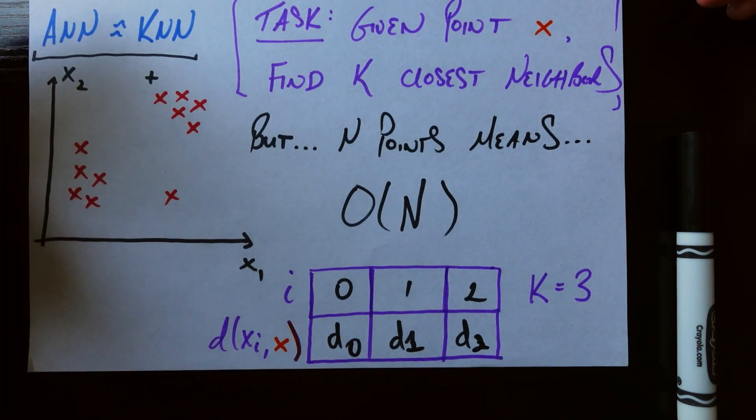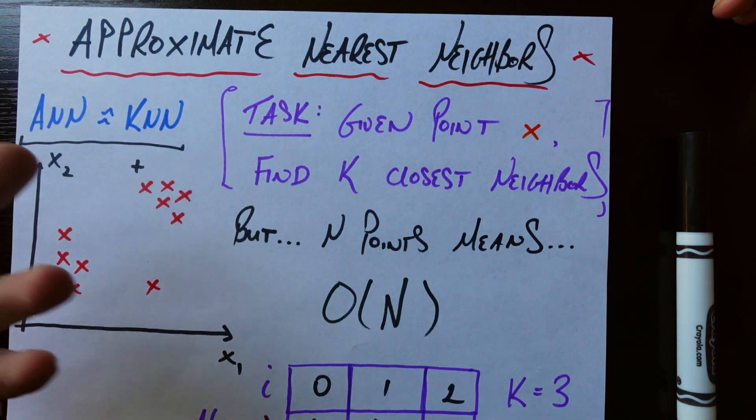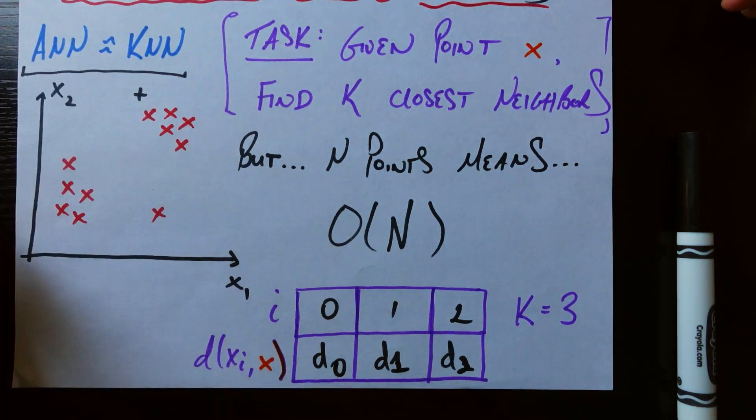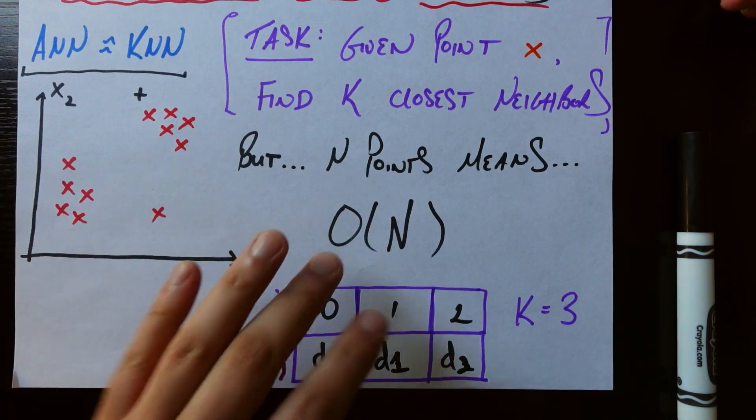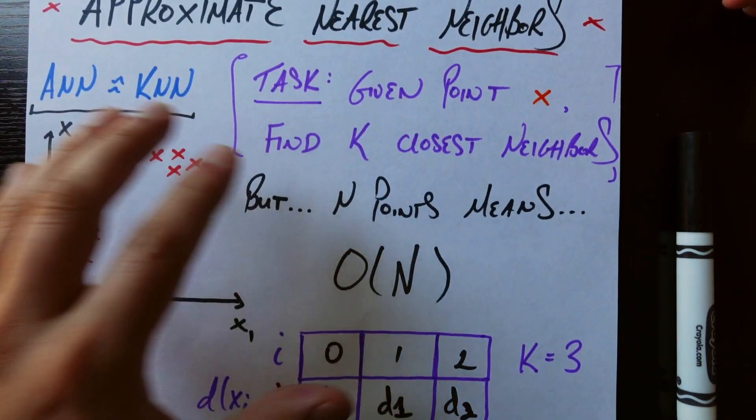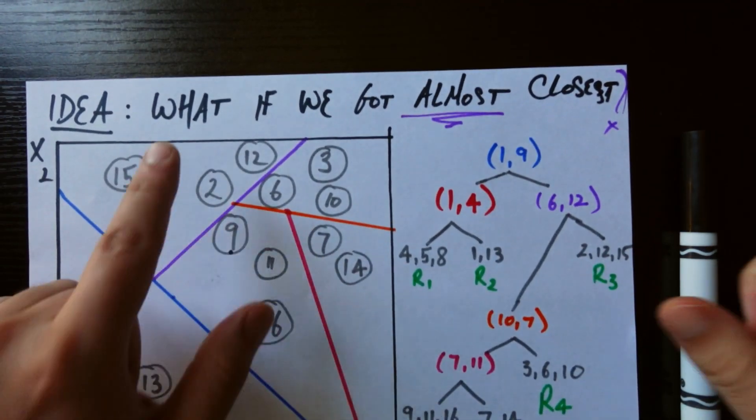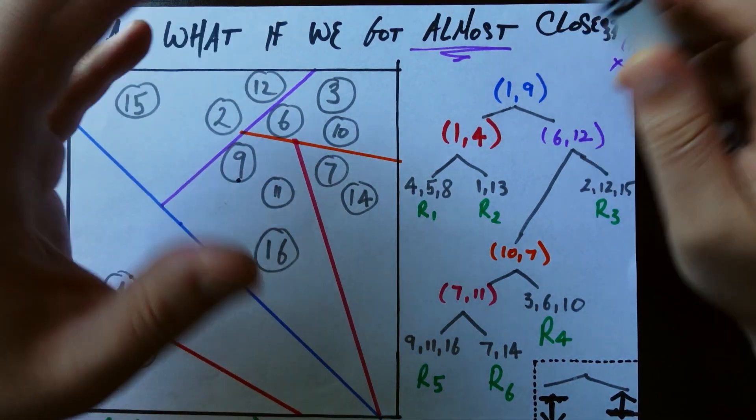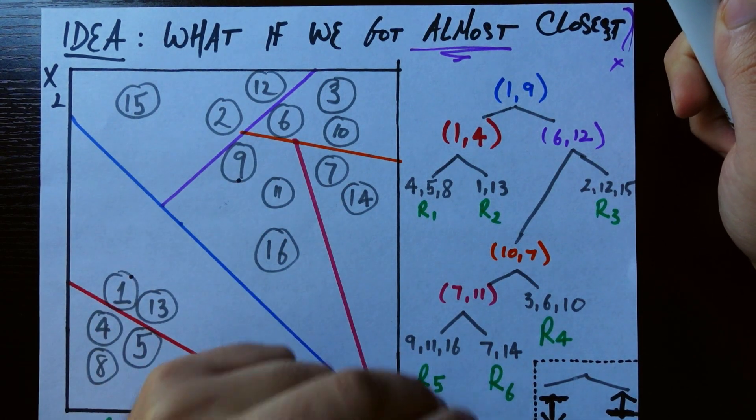And I want to make it very clear that if you are indeed looking for the true three closest neighbors or five closest neighbors to some given point, this is really the best you can do. You have to visit every single point because any given point could be one of your closest neighbors. So this is the best you can do. And so I say that because approximate nearest neighbors isn't some kind of magic bullet that finds the three closest neighbors in some less amount of time. Instead, the goal of approximate nearest neighbors is what if we got the almost closest neighbors? What if we got a pretty good approximation to the three or five closest neighbors, but in a fraction of the time? And that is the name of the game for approximate nearest neighbors.